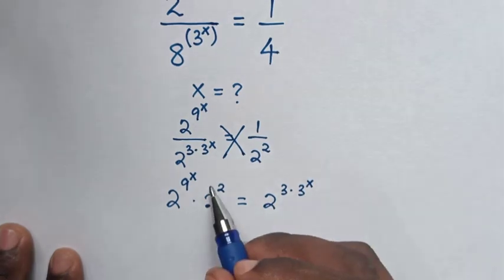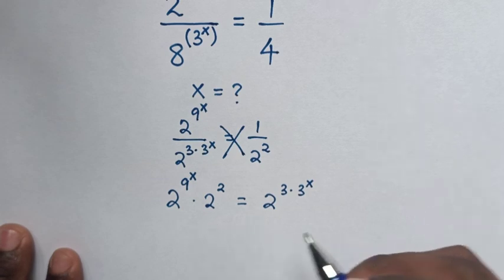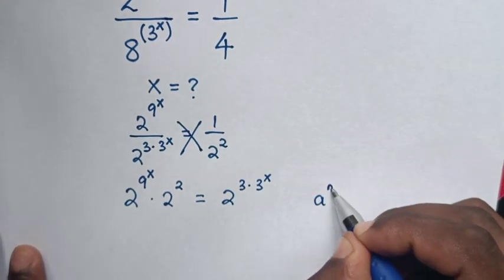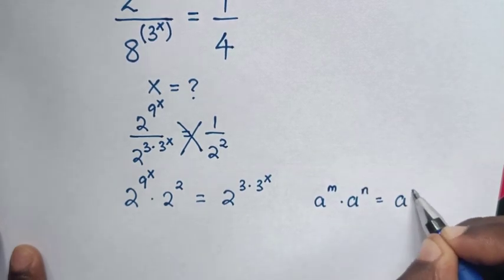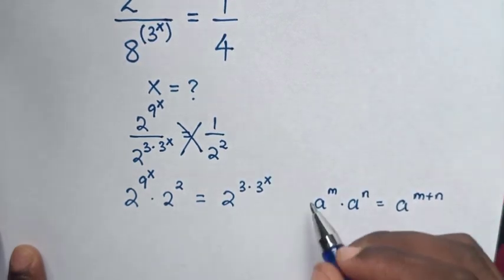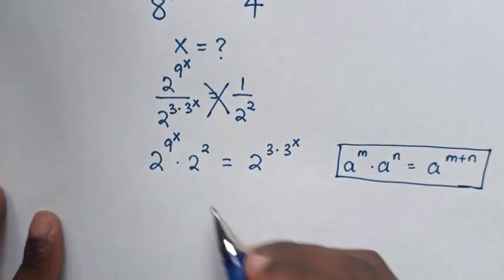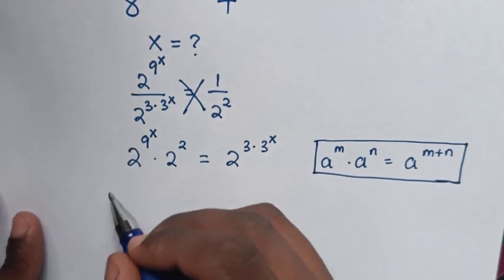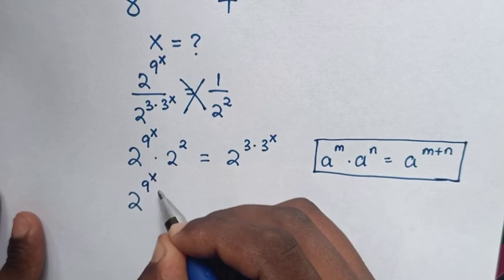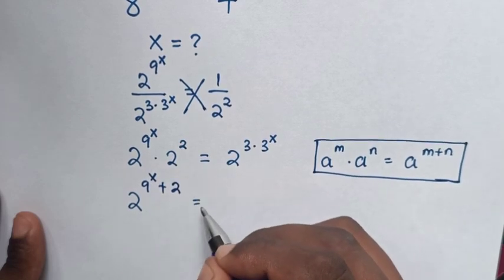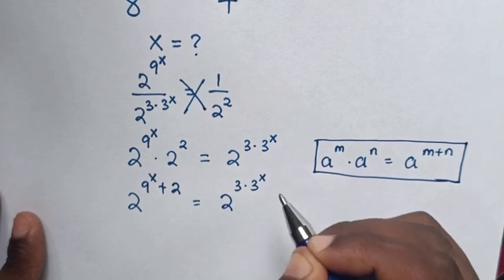Then from here, multiplication of exponents with the same base but different powers — we apply the rule: a^m times a^n is equal to a^(m+n). So it will be 2^(9^x + 2) is equal to 2^(3 times 3^x).